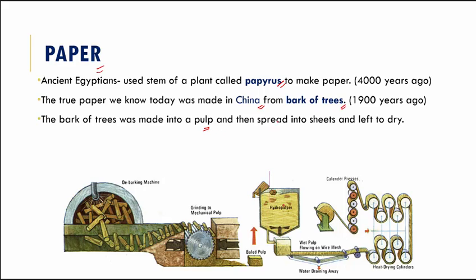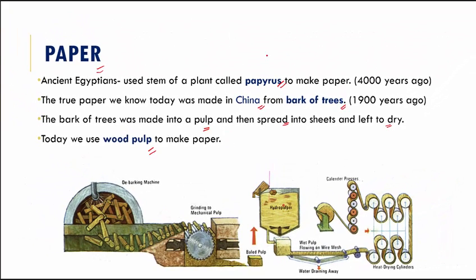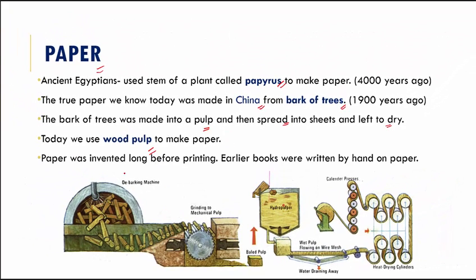The Chinese allowed tree bark to be made into a pulp, then spread into a sheet and left to dry so they could write on it. Today we use wood pulp to make paper — you can see here wood being converted into pulp, which is then spread into a sheet, dried, and rolled up. This is how we make paper even today.